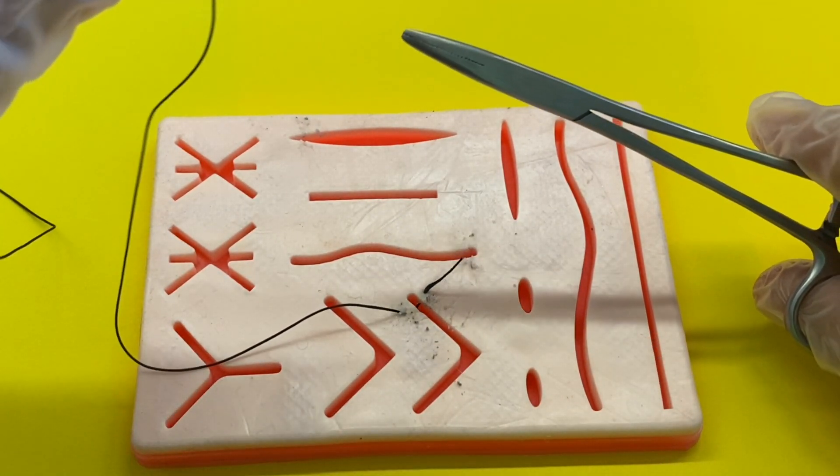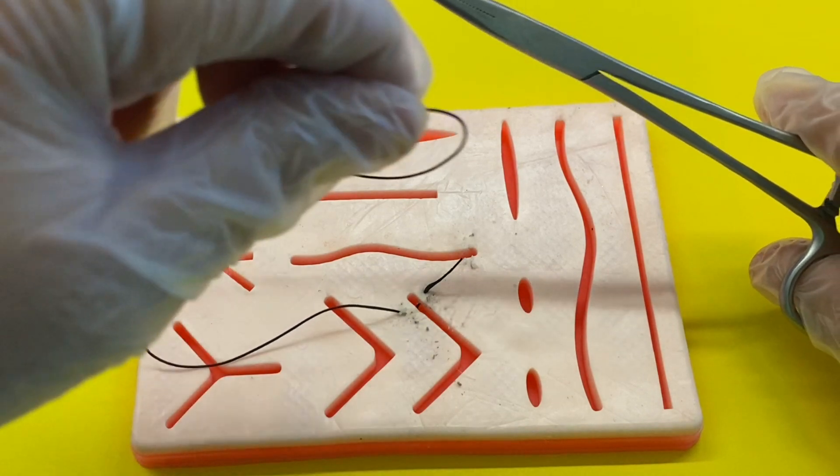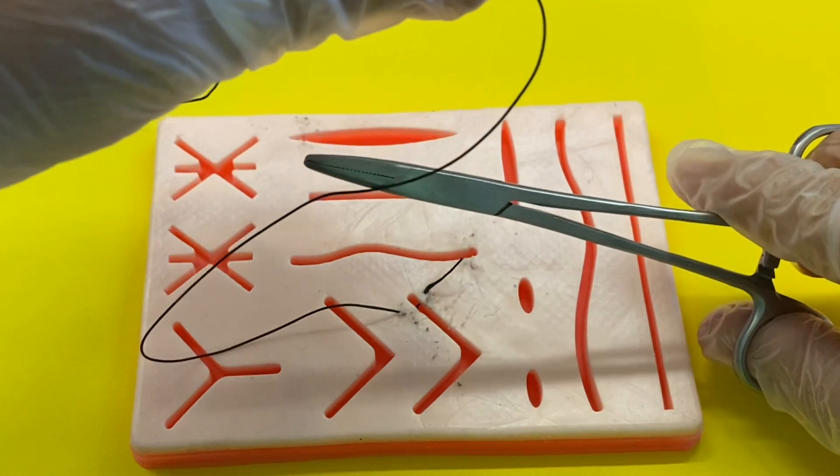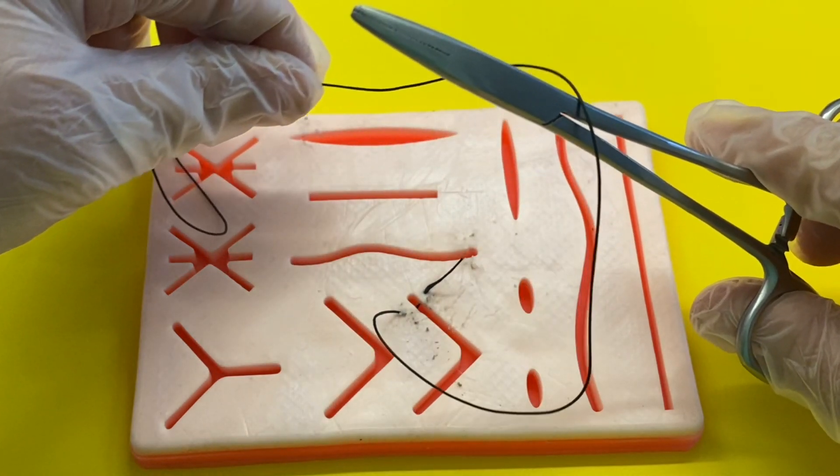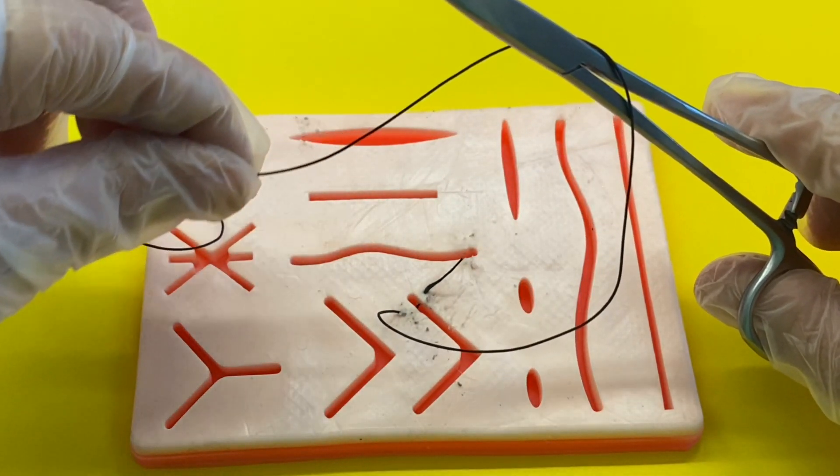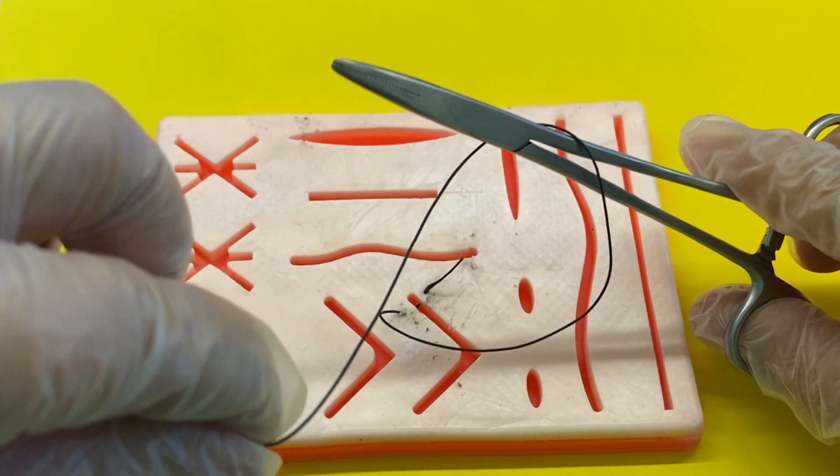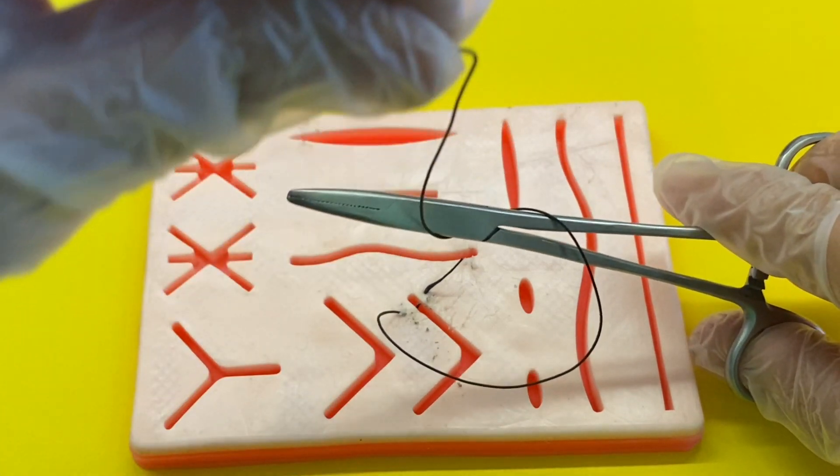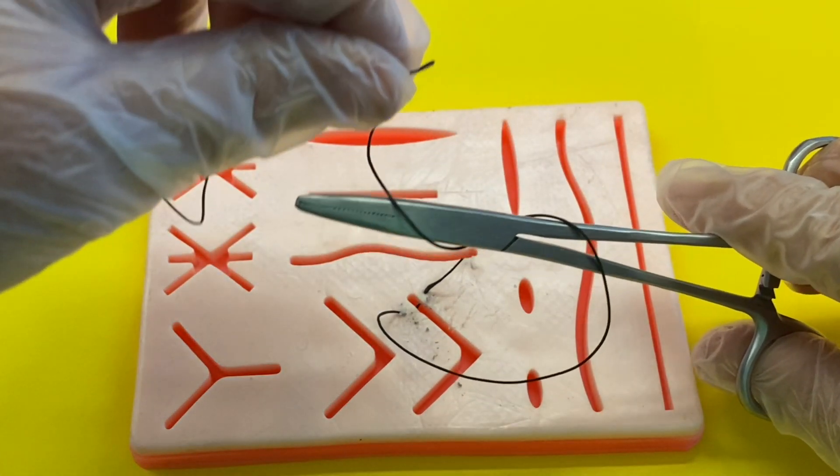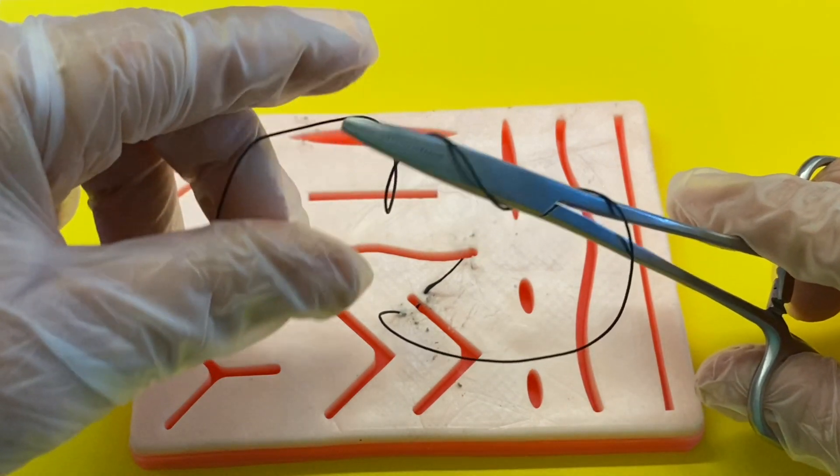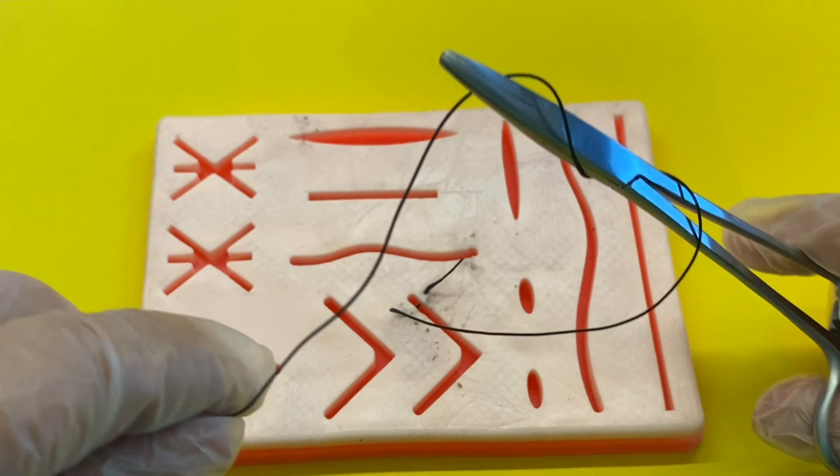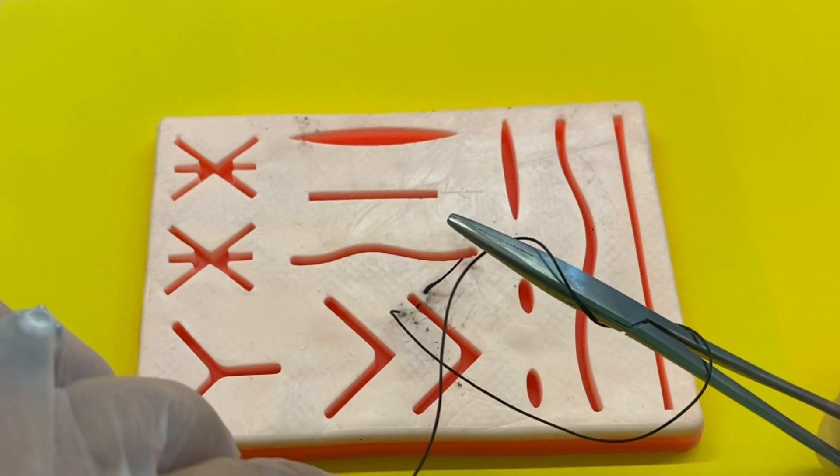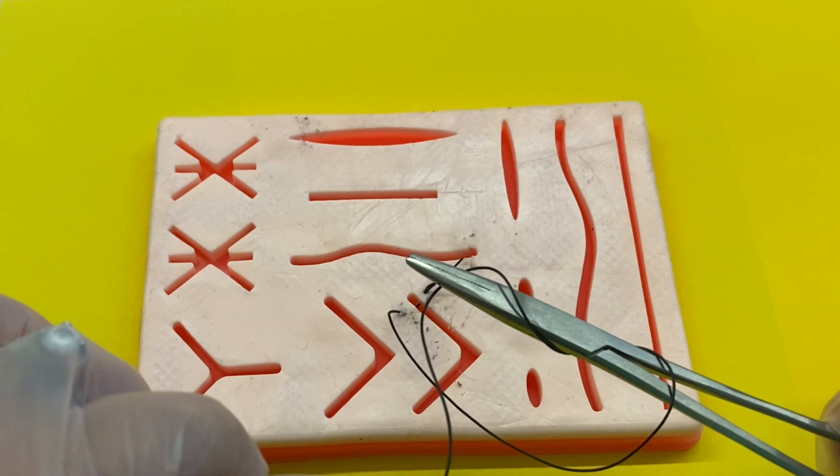I'm going to play that for you again in slow motion. Follow along as you watch. Wrap around once, make sure that the thread is loose, wrap around twice, then open up the needle holder and you're going to grab the thread down below.